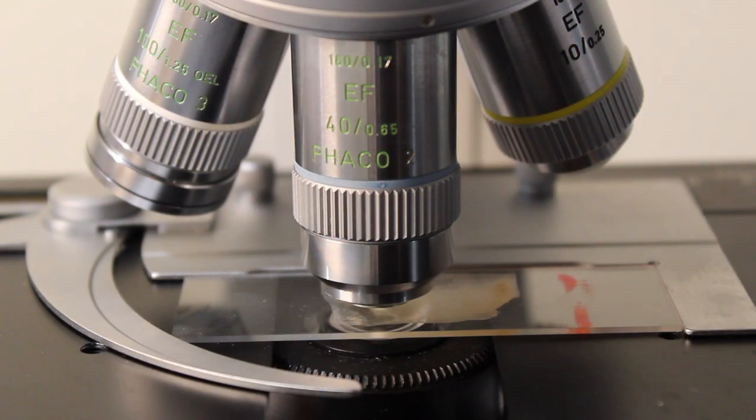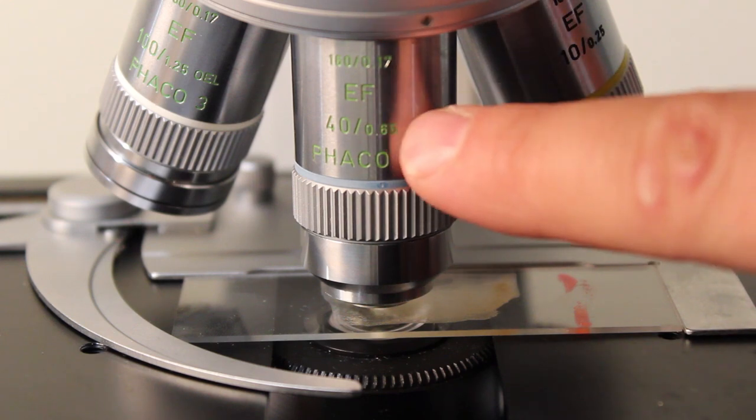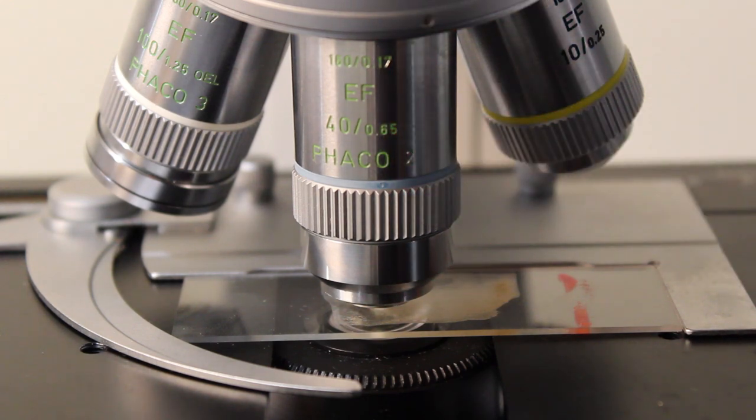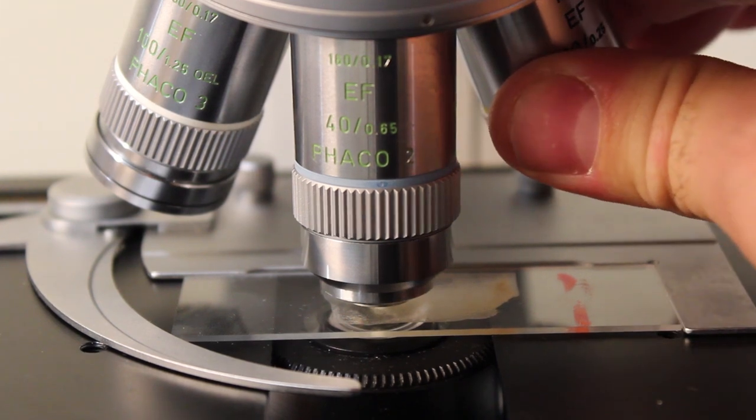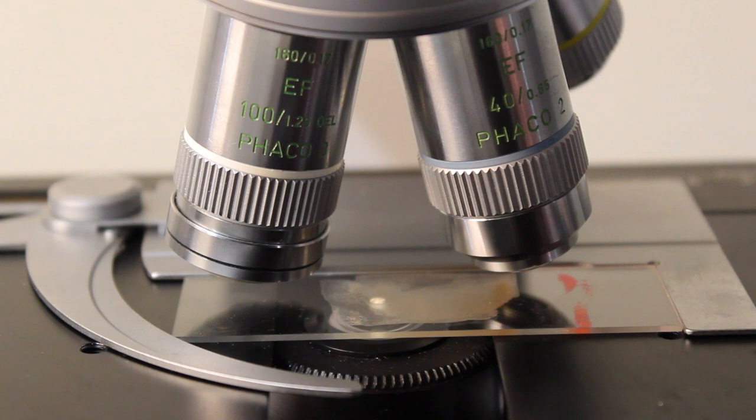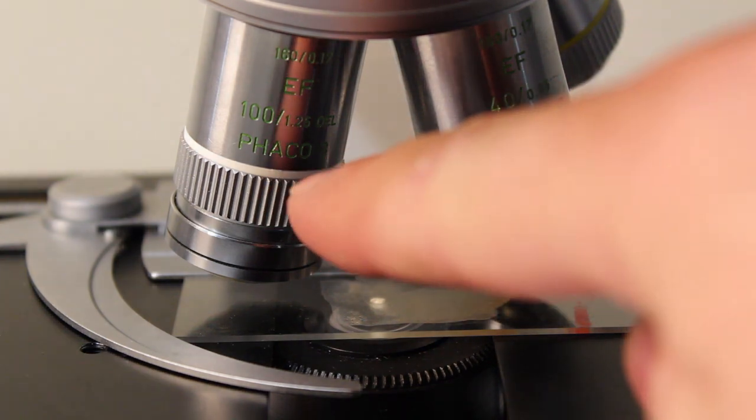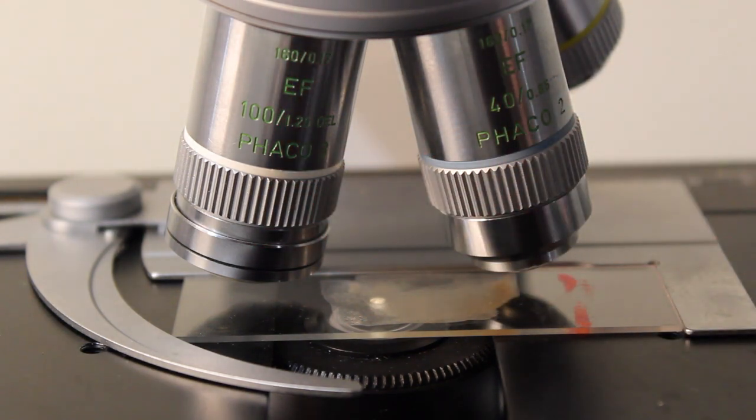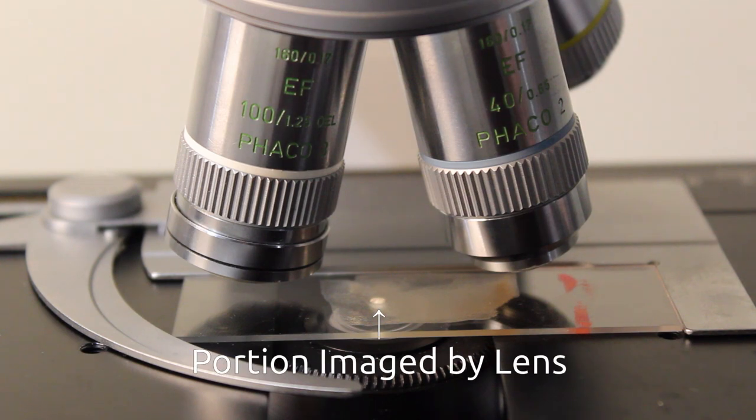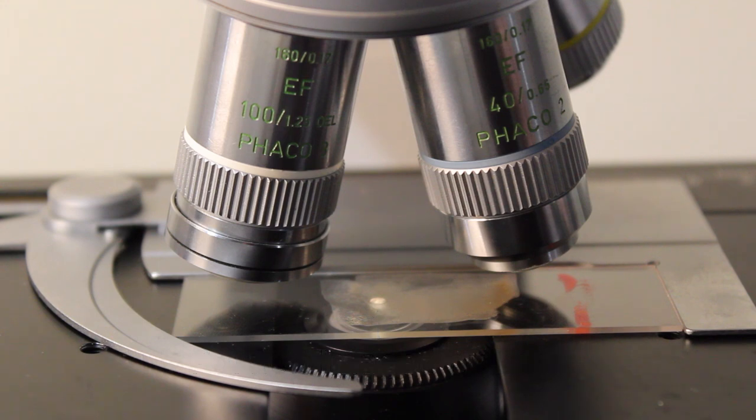The first step to adding oil is to make sure your sample is correctly focused at the highest magnification air lens that you have available. Next, you want to rotate the nose piece so that you're exactly halfway between your oil lens and your high magnification air lens, and you can see that bright spot on the stage, which is the part of the sample that is actually going to be imaged by the lens.